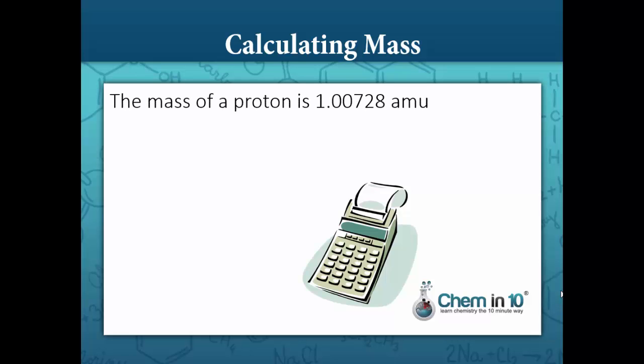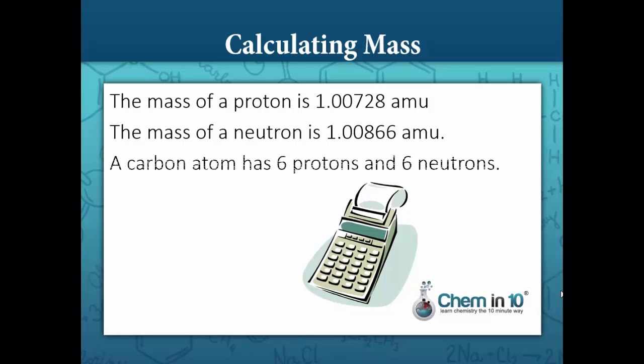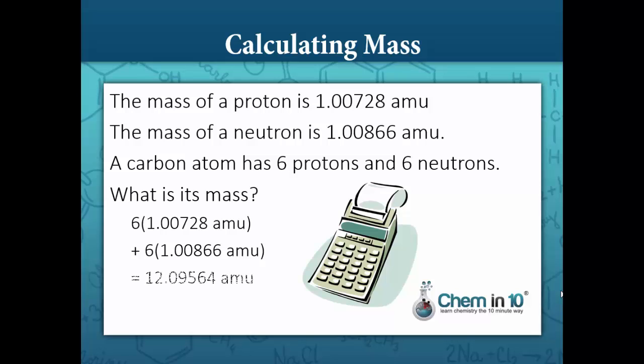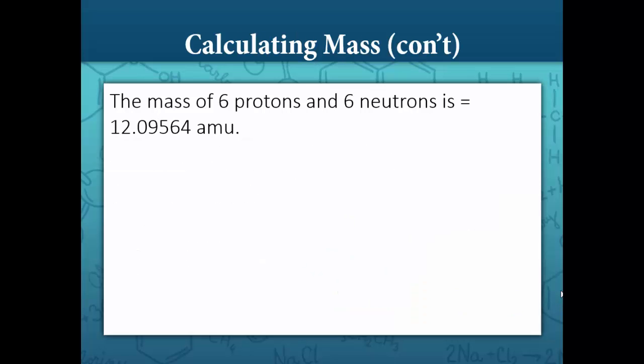The mass of a proton is 1.00728 atomic mass units. The mass of a neutron is 1.00866 atomic mass units. A carbon atom has 6 protons and 6 neutrons. What is its mass? 6 times 1.00728 AMU plus 6 times 1.00866 AMU equals 12.09564 AMU. Therefore, the mass of 6 protons and 6 neutrons is 12.09564 AMU.